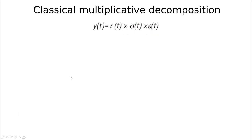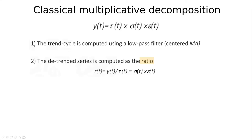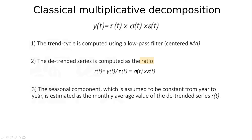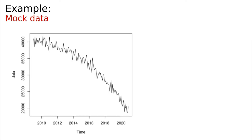For multiplicative decomposition the idea is more or less the same. We have the trend cycle estimated using a moving average, but instead of subtracting we divide — taking the ratio — to get the detrended series. The seasonal component is then computed by division rather than subtraction, since everything is multiplicative.